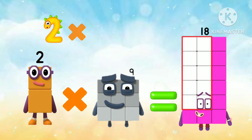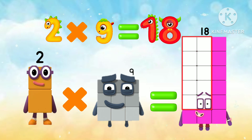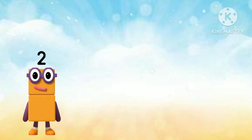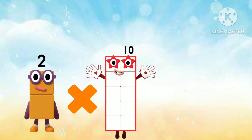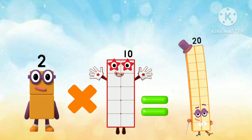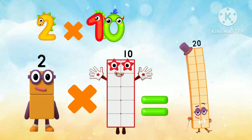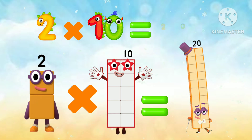2 times 9 equals 18. 2 times 9 equals 18. 2 times 10 equals 20. 2 times 10 equals 20.